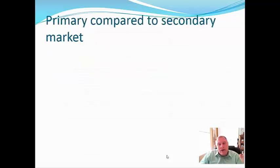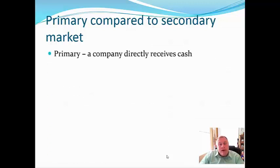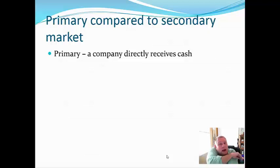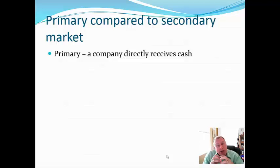Now let's look at primary offering of securities versus the secondary market — an important distinction. In a primary offering, a company directly receives the cash. They file a Form S-1; it's an initial public offering where the company itself offers shares to the public through a broker or investment banker, but the company gets the cash. This is often referred to as an IPO.